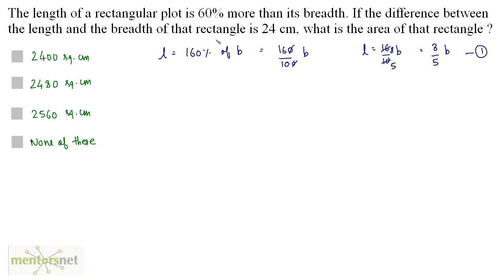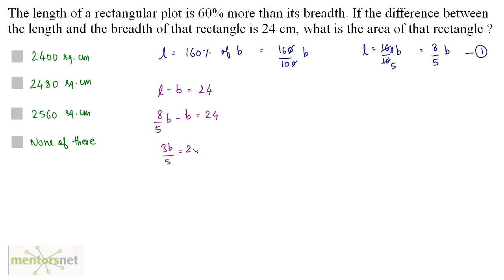We have also been given the difference between the length and the breadth as 24, so L minus B is equal to 24. Now put the value of L in this equation: 8 by 5 times B minus B equals 24. So I have 8B minus 5B, that is 3B by 5, equals 24.